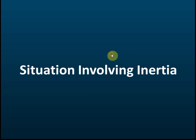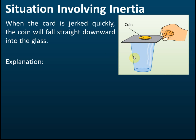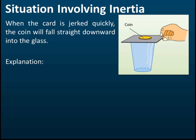For example, if you put a coin on top of a card, and the card is above a glass, and you jerk the card quickly — pull it suddenly — you will find that the coin falls straight downwards into the glass. If you pull the card slowly, the coin moves together with the card. But if you jerk it quickly, the coin does not move with the card and instead falls straight into the glass.